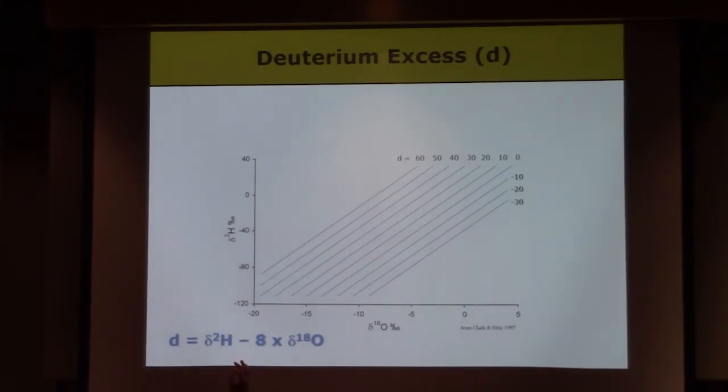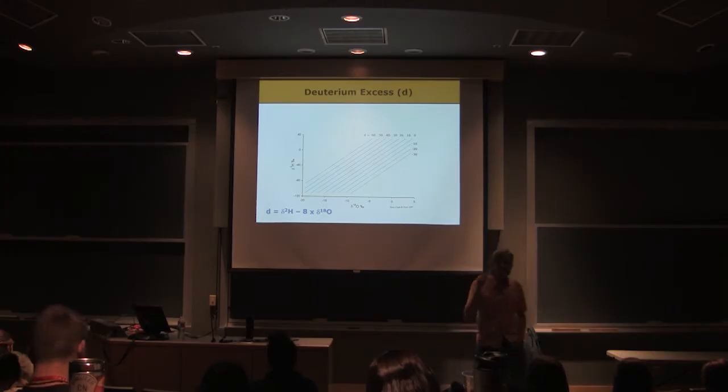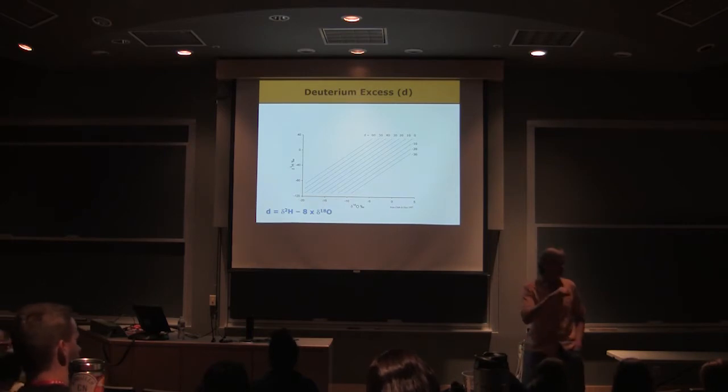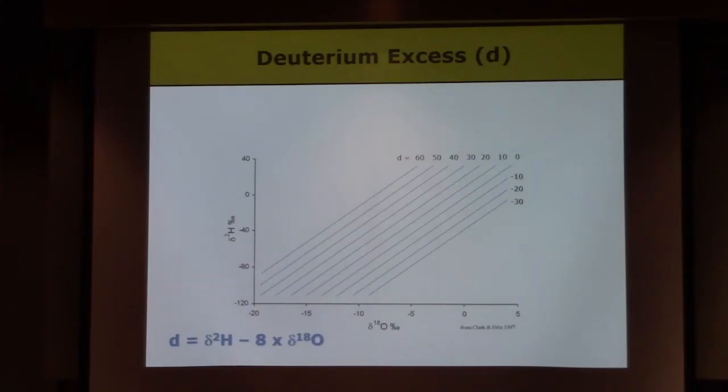Deuterium excess, importantly, is a property of a water sample that we've measured. It's something that we can calculate any time we have a hydrogen isotope value and an oxygen isotope value for a water sample. It's simply the hydrogen isotope value minus 8 times the oxygen isotope value.